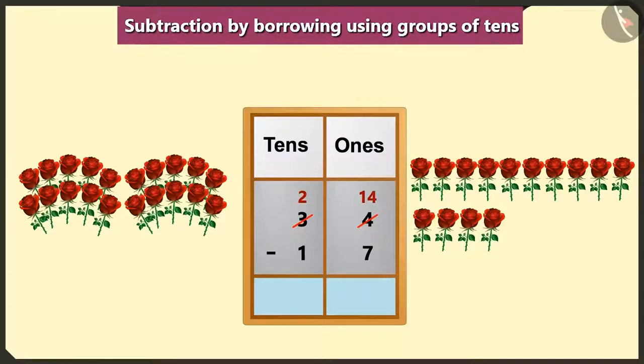Now, first of all, if we will subtract 1, 2, 3, 4, 5, 6, and 7 are left in the place of ones.